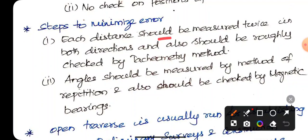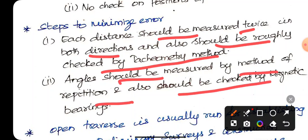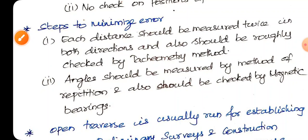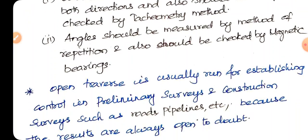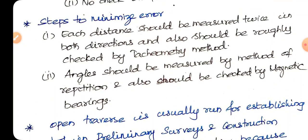When the error is minimized, each distance should be measured twice. Distance should be measured in both directions and also should be checked by tachymetry method. Angles should be measured by the method of repetition and also should be checked by magnetic bearing. So repetition method is face right, face left, and average.